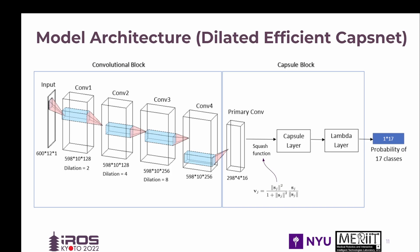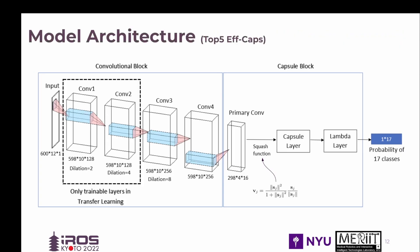To further reduce the training data while maintaining high performance, we leverage the concept of transfer learning. We pre-train the dilated efficient CapsNet on the data from the top five performing subjects together. The dashed line in the convolutional block denotes that only two convolutional layers in the model are trained when calibrating individually on the 35 remaining subjects in the dataset.